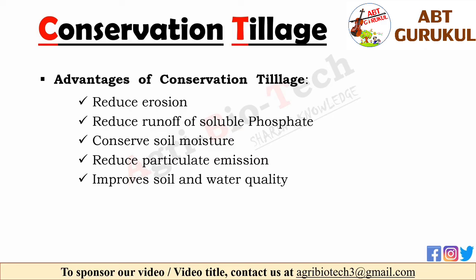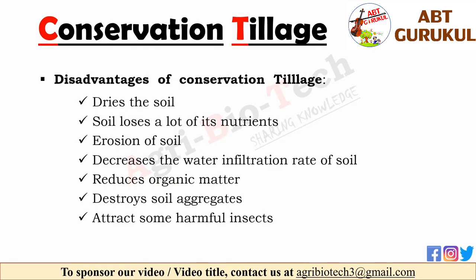Some disadvantages of conservation tillage are: it dries the soil before seeding; the soil loses nutrients like carbon and nitrogen and its ability to store water; it is responsible for more soil erosion; it decreases the water infiltration rate of soil; it reduces organic matter in the soil including microbes, carbon compounds, and earthworms; it destroys soil aggregates; and it can attract some harmful insects to the field.